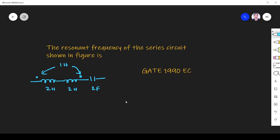Hi friends, in this video let us solve a steady state analysis question from GATE 1990 EC paper. The question asks for the resonant frequency of the series circuit shown in the figure. They have given a series L and C, and we have to find the resonant frequency.